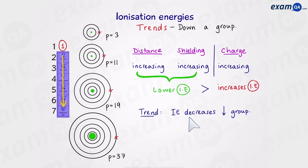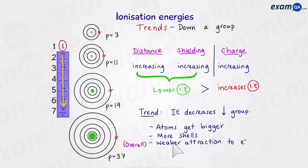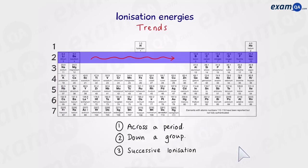Here's the explanation in case they ask you in an exam. Down the group, atoms get bigger because there are more shells, and overall there's going to be a weaker attraction from the nucleus to the outermost electron. Okay, let's move on to the next trend — across a period.